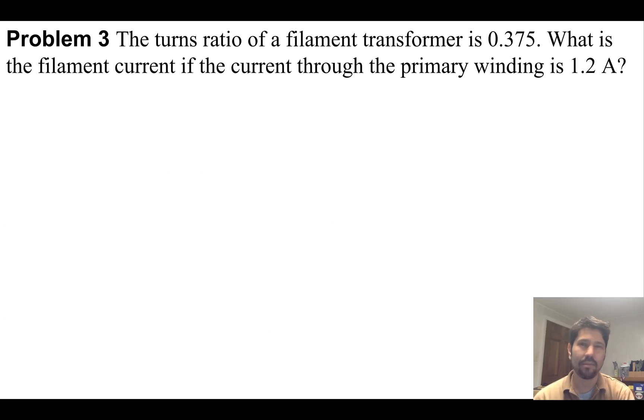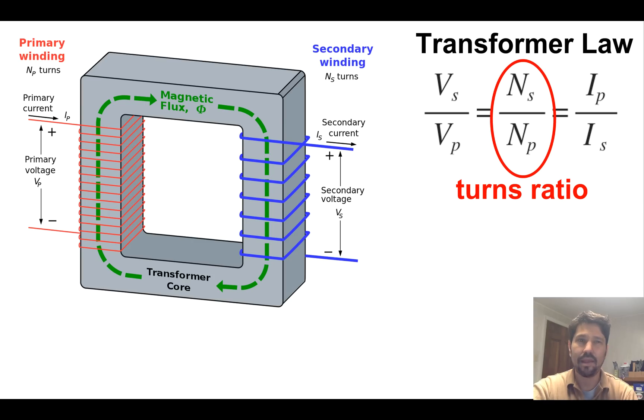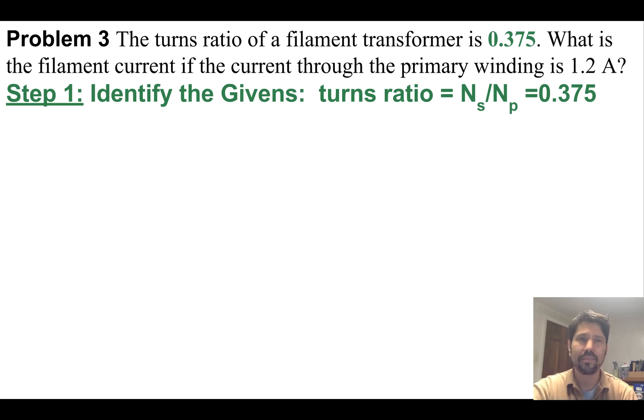Our third and final problem: The turns ratio of a filament transformer—that'll probably be stepped down because the filament I want a lot of milliamps and I don't need much voltage to burn off some electrons. The turns ratio of a filament transformer is 0.375. A turns ratio less than one, so I know it's stepped down. What is the filament current if the current through the primary winding is 1.2 amps? Identify the givens: turns ratio is NS over NP equals 0.375, and the primary current is 1.2 amps.